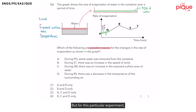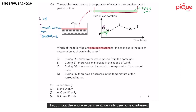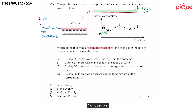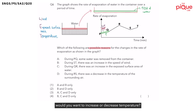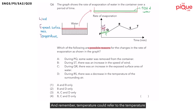But for this particular experiment, was a bigger container used? No — throughout the entire experiment only one container is used. So it is not possible to change the exposed surface area of water. This is why I'm cancelling out E from the factors. Next, T stands for temperature. In order to increase the rate of evaporation, we would want to increase temperature — either the surrounding air or the water itself.